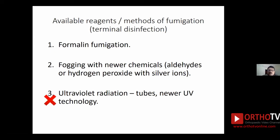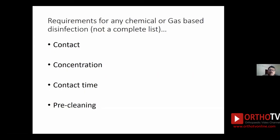UV radiation is crossed out, leaving us with formalin fumigation or the newer chemicals as our two options. When any chemical or gas is used for disinfection, the important parameters for achieving the desired level of disinfection are: contact of the chemical with the microbes; concentration of the chemical maintained throughout the process; contact time — the chemical must remain in touch with the microbes for a certain period; and pre-cleaning of the surface to be disinfected.